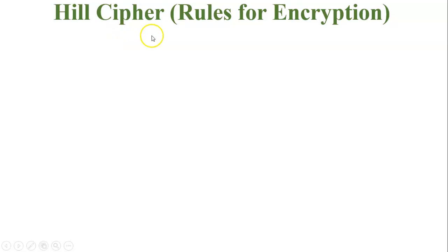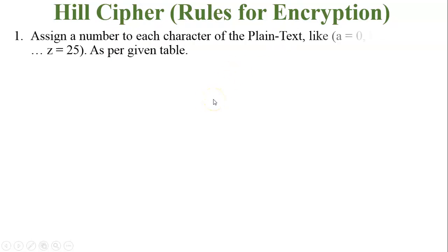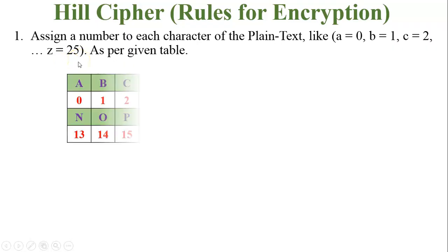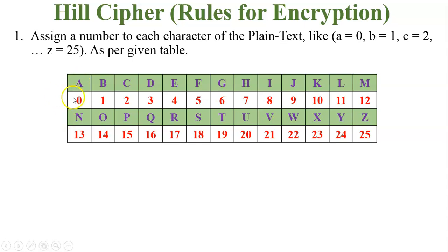Hill cipher rules for encryption: Rule 1 — assign a number to each character of the plain text, where A=0, B=1, C=2, up to Z=25. Here I have prepared a table — you can see A=0, B=1, C=2, up to Z=25. All numbers are assigned in sequence from 0 to 25 to alphabets A to Z.